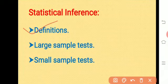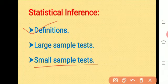We are going to study the large sample test and small sample test in detail. In the large sample test, we have four different tests: test for single mean, test for equality of means of two populations, test for single proportion, and test for equality of proportions of two populations. In the small sample test, we study two different tests: the chi-square test and the t-test.